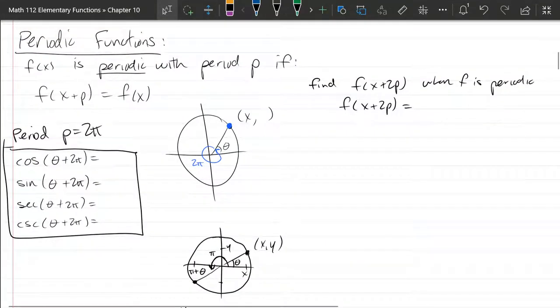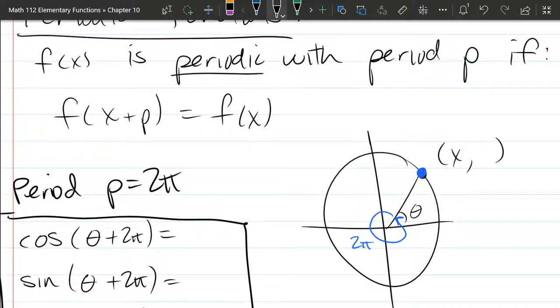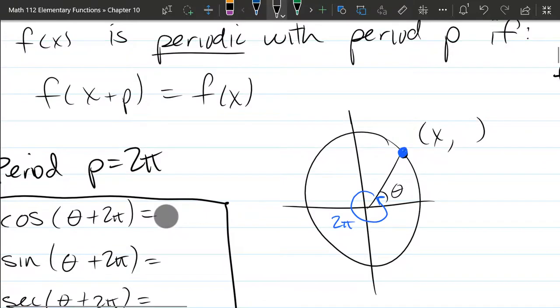We're looking at periodic functions, and we're going to start with the definition. So a function is periodic with a period P if the function, when you add P to the input, does not change the output. So it's just like not adding P at all. So what that means is it repeats on X values. So the Y values repeat on X values.